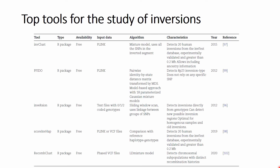Next up are the top tools to study inversions. The top of the list is InvClust, which is an R package — and actually all of these tools are R packages, making them very convenient to use. InvClust and other packages in this category also use PLINK as the input file format. The other tools are PFIDO, InvClustR — a clever wordplay indicating it is an R package — ScoreInvClust, and RecompClust.